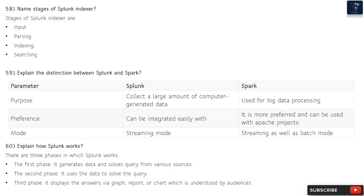Question 60: Explain how Splunk works. There are three phases: the first phase generates data and solves queries from various sources; the second phase uses that data to solve the query; and the third phase displays the answers via graphs, reports, or charts which are understood by audiences.